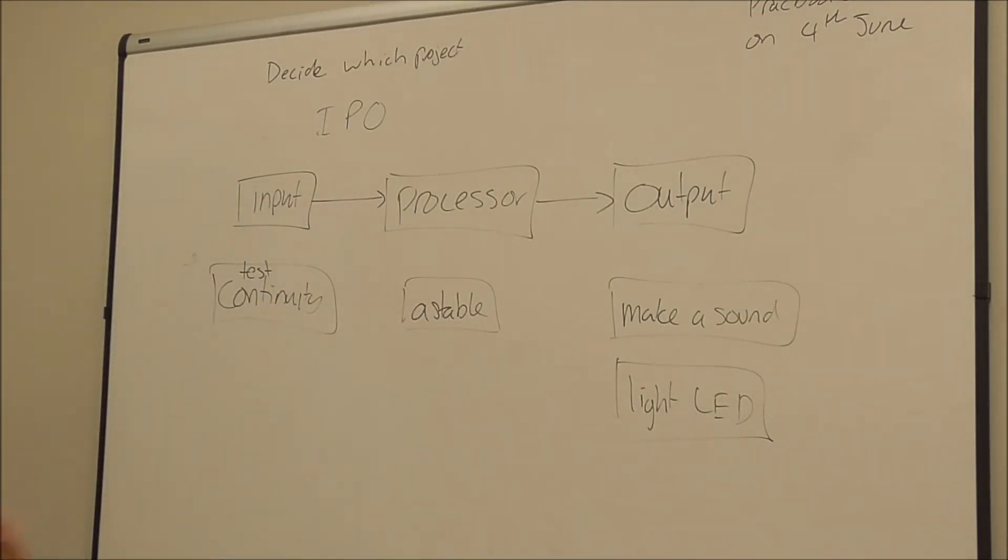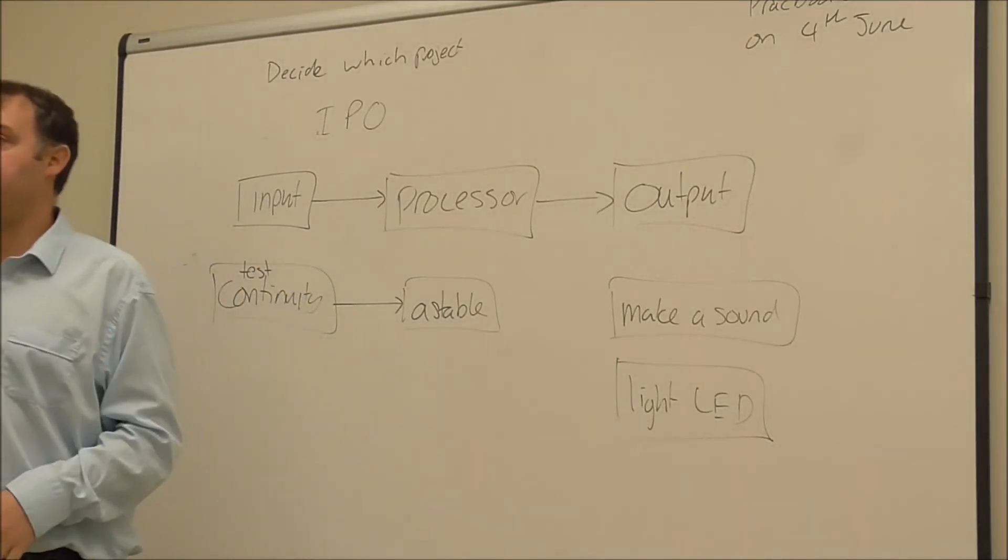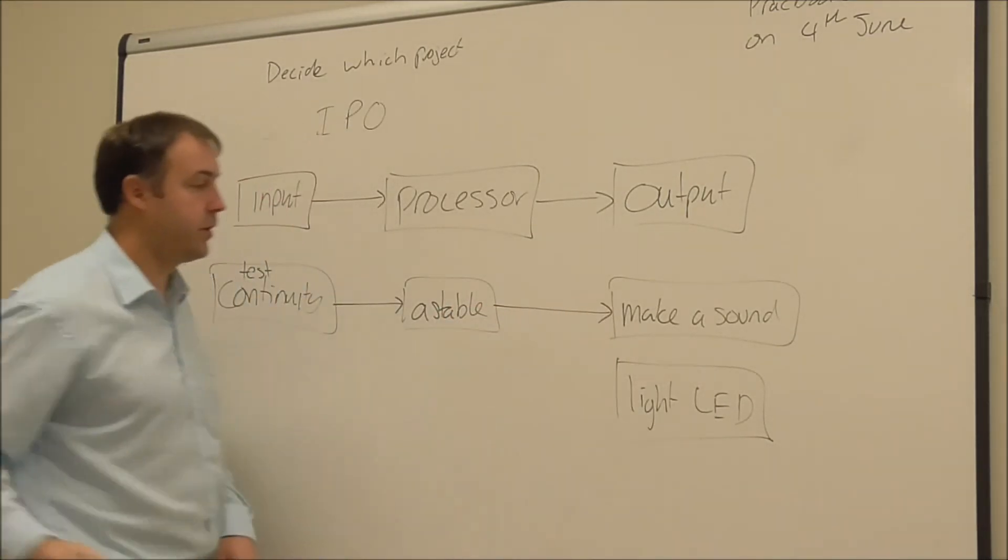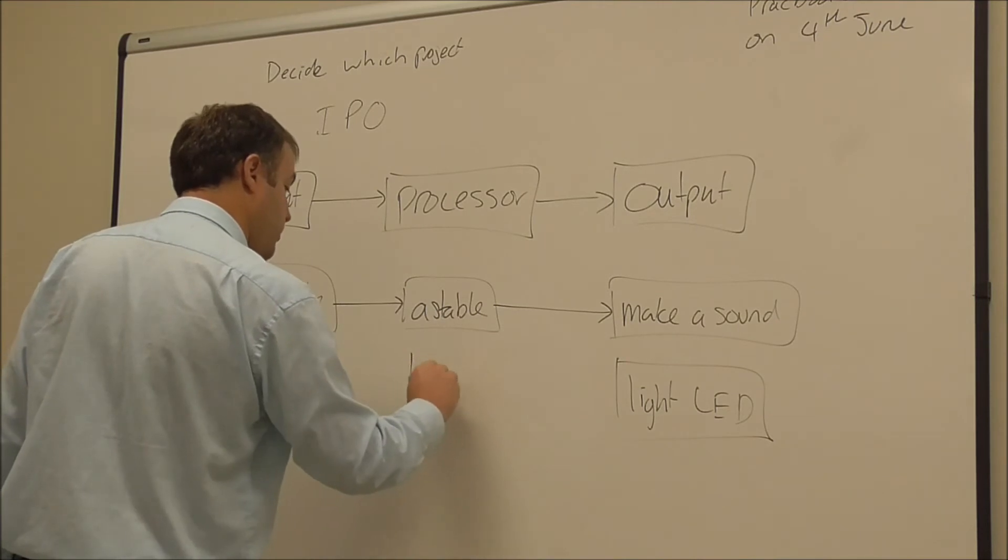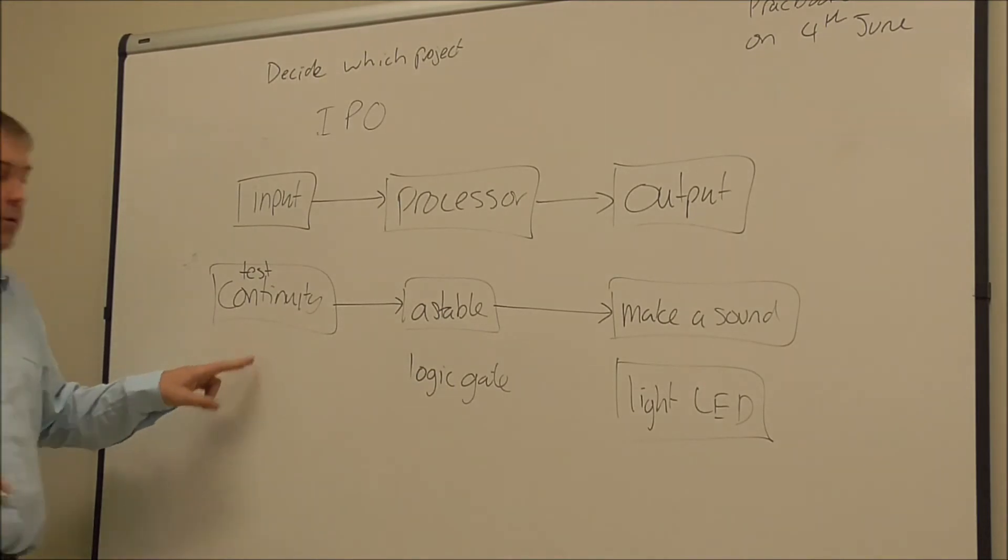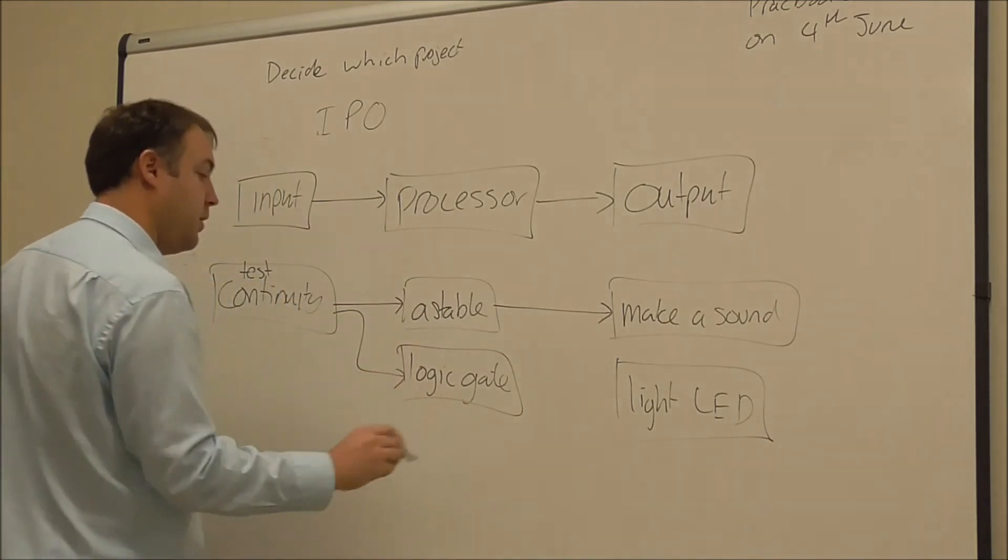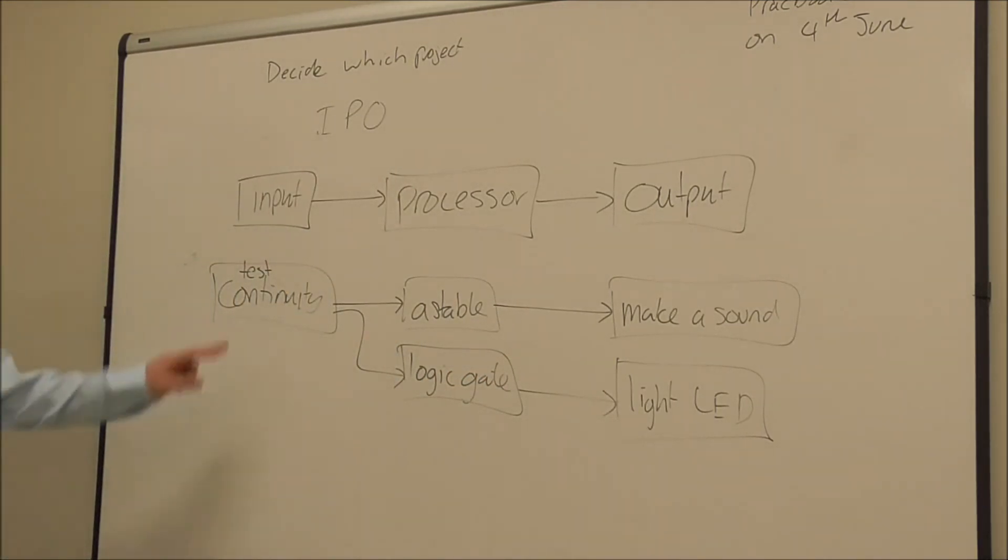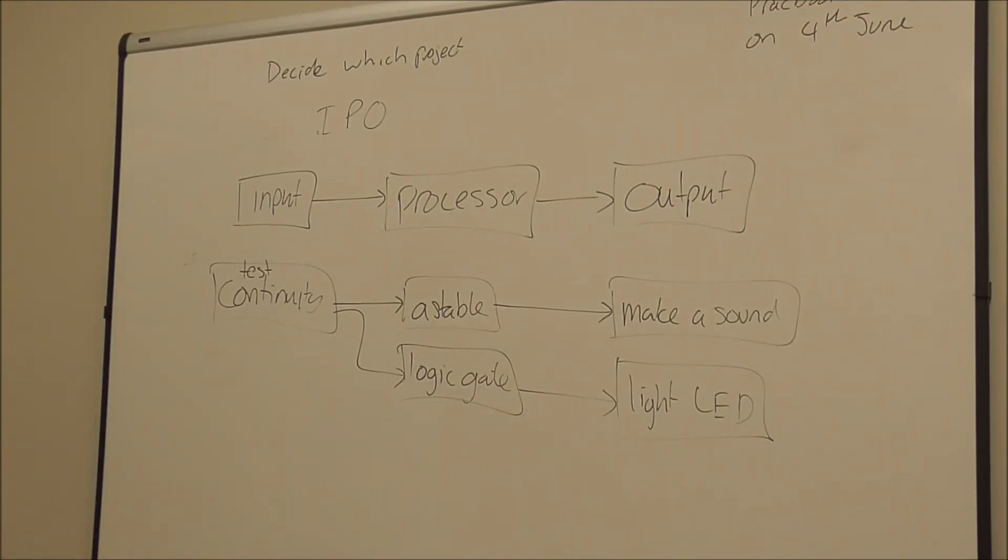So this will be one of my processors. The continuity tells the astable to go and the astable makes the pulses that's needed for a speaker to make sound. I could also have maybe a logic gate if I need it. So it might be an inverter or it might be an AND gate or something like that, which lights an LED when continuity is tested. So this is an example, and it's not particularly a good example because I wouldn't make it necessarily work like this in my project.